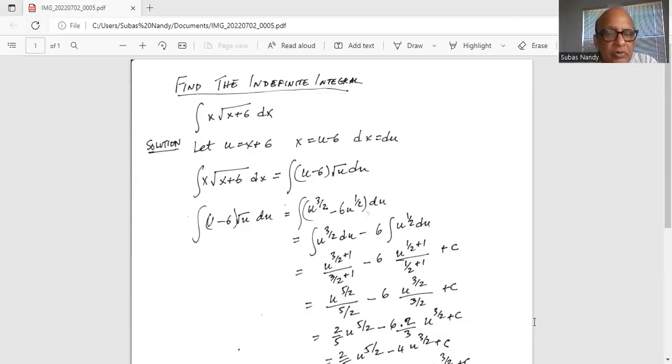So it becomes u to the power of 5 over 2 divided by 5 over 2 minus 6 u to the power of 3 by 2 divided by 3 by 2 plus c.